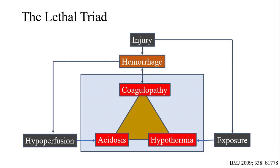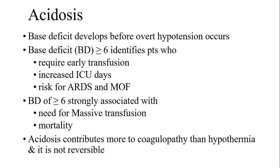We know the lethal triad is coagulopathy, acidosis, and hypothermia, and they all perpetuate each other. Patients get injured, they bleed, they are hypoperfused leading to acidosis, and since they are exposed without active warming they get hypothermia. Hemorrhage itself can cause coagulopathy, creating a vicious cycle. You will see base deficit before hypotension appears — patient blood pressure might still be normal. Studies on base deficit and lactate suggest that acute hypoperfusion may be present even with a normal blood pressure.